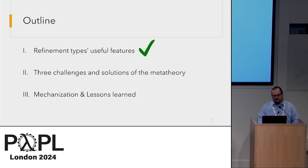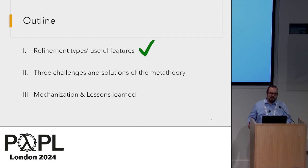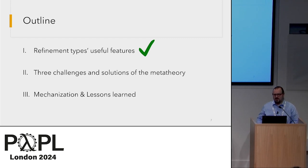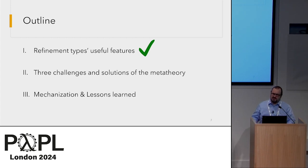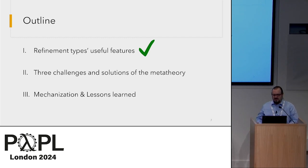The outline for the rest of the talk: now that we've talked about the useful features of refinement type systems, we'll talk about three challenges that arose formalizing our metatheory, the solutions to each of these challenges, and then I'll talk about our mechanization and the lessons we learned there.